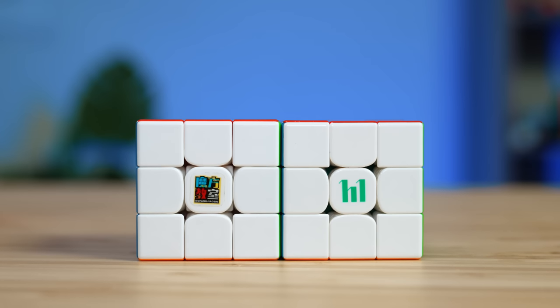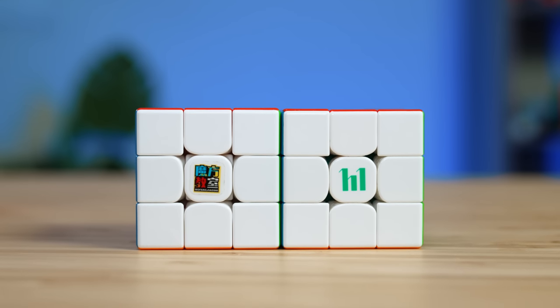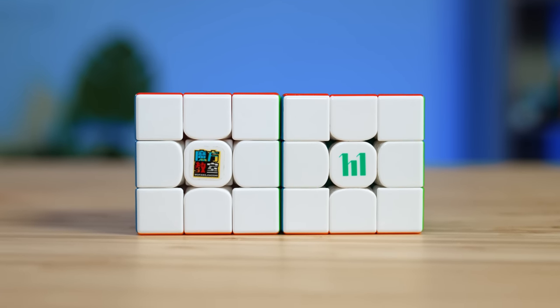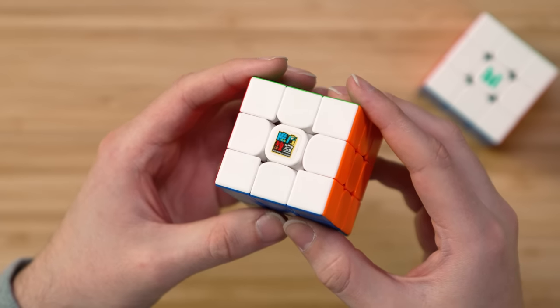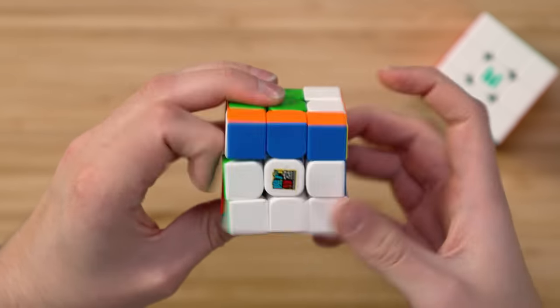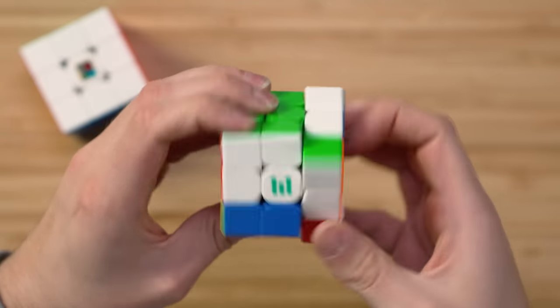Compared to the RS3 2020, the YS3M is a little bit smaller. At 55 millimeters, it's more compact, and you can really feel that when you're holding and turning the cube. The cube is also not as clacky as the RS3 2020, especially out of the box.